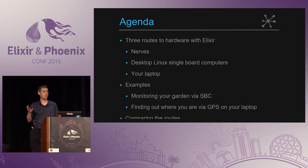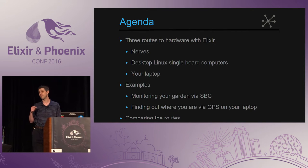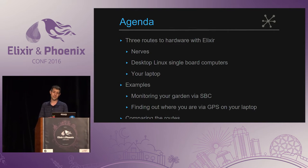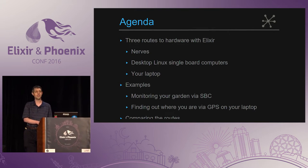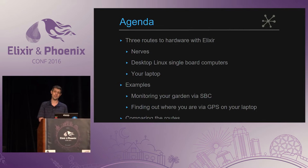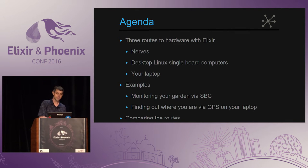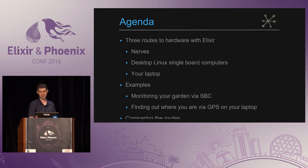There are three main ways of interacting with hardware when you're using Elixir. One is Nerves — a favorite of mine. The second is using desktop Linux on single-board computers like Raspberry Pi or BeagleBone. And the third, which I think is completely underrated, is interacting with hardware on your laptop — but you need to know the trick for how to get started on that route. I'll talk about all three and give a couple of examples of projects that have gone these routes.